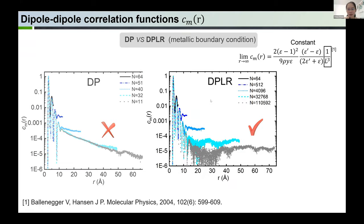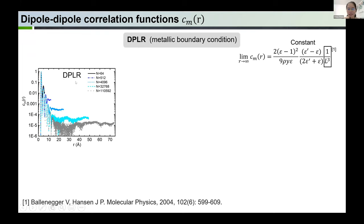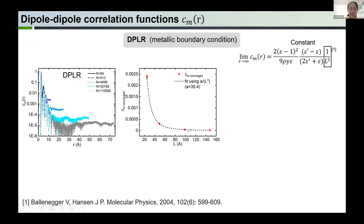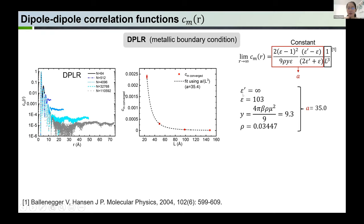We also did a further quantitative analysis. We checked whether the converged constant predicted by DPLR has the expected 1/L³ behavior. We plotted the converged constant at each cell length as red squares and conducted a non-linear curve fit using A/L³. We find the DPLR result agrees well with the A/L³ behavior, and the fitted A equals 75.4. We also did a self-consistent check using our simulation results to substitute into the formula, obtaining A equals 75, which is very close to the fitted result. This further validates our DPLR simulation.